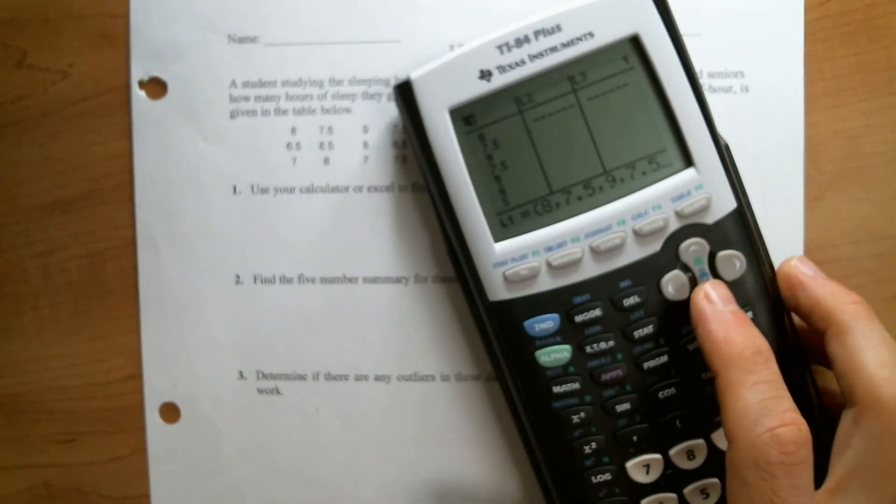All right, let's take a look at this review warm-up. This is sort of practice for the test that you will be taking next block. The first one just says use your calculator to find the mean and standard deviation of the data. I'm not going to ask you to calculate standard deviation by hand, but you should be able to get it off the calculator. I've already gone ahead and taken time to put all of that data into L1.